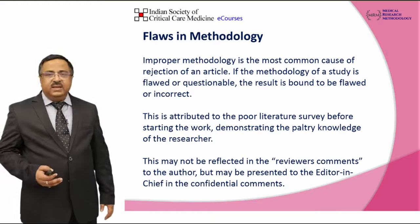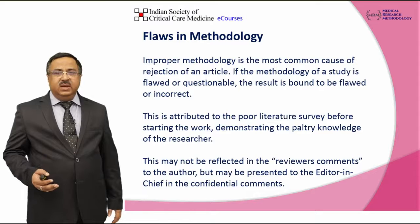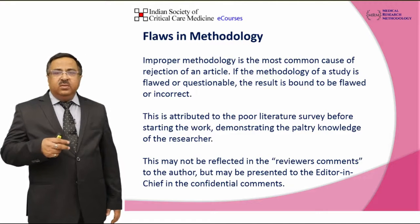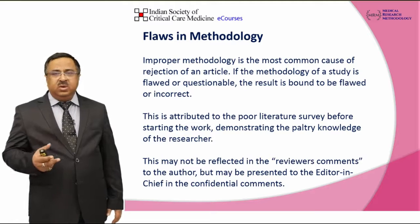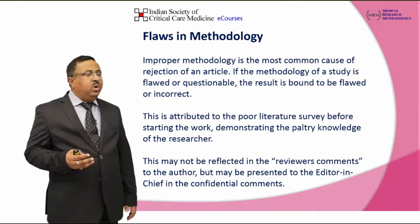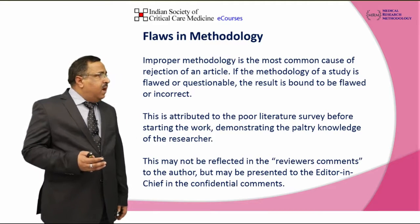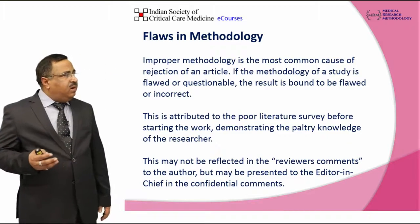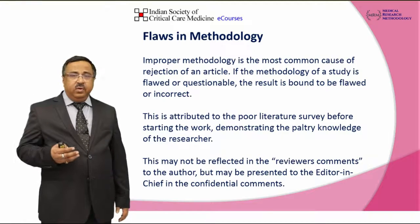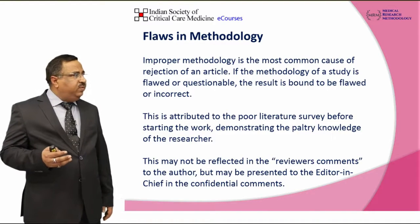Flaws in methodology is another important and one of the most common causes of rejection. If the methodology itself is not written properly, the result and outcome will obviously be biased or will not come out in a proper manner. This is attributed to poor literature survey — meaning the literature survey has not been done properly — and that demonstrates a paltry knowledge of the researcher. This may not be reflected in reviewer comments, but may be presented to the chief editor.